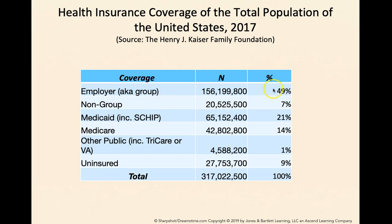The biggest portion of coverage, which is almost half — 49 percent of the population — is covered by employer-based health insurance. They're also called groups, or group insurance, because they are grouped into risk pools. We talked about risk pools earlier — they're formed by the employers that sponsor that health insurance.